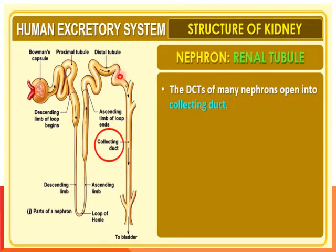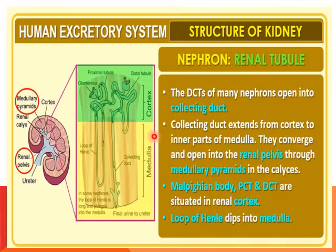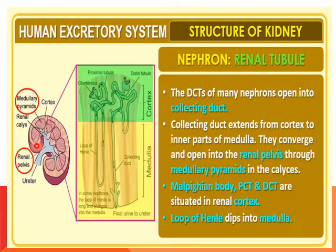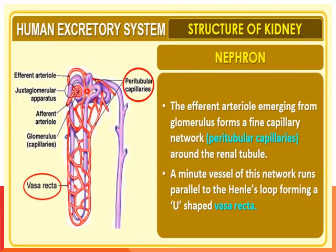The distal convoluted tubules of many nephrons open into the collecting duct. The collecting duct extends from the cortex to the inner part of the medulla and converges to open into the renal pelvis through the medullary pyramids. The Malpighian body, PCT, and DCT are situated in the renal cortex, while the loops of Henle dip into the medulla. The efferent arteriole from the glomerulus forms a fine capillary network called peritubular capillaries around the renal tubules. Minute vessels of this network running parallel to Henle's loop are known as the vasa recta.